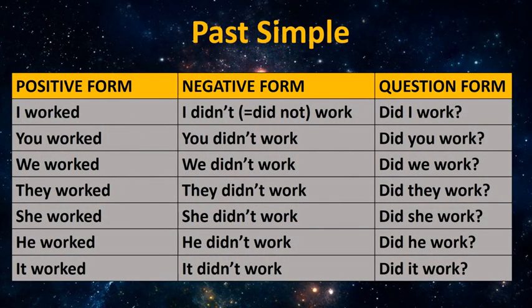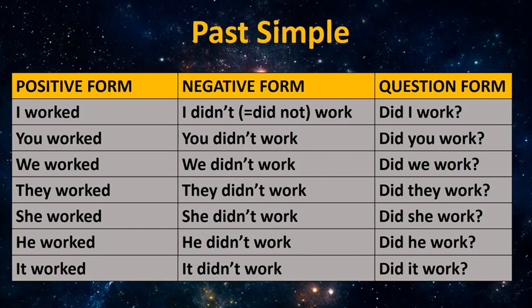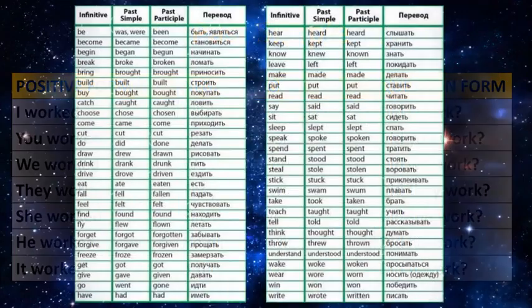Past simple is used for past actions. Past simple, like present simple, has three forms: positive, negative, and question. In regular verbs we add -ed to the verb. We use the second form of the verb if the verb is irregular. For example: I worked. In the negative form: I didn't work. Question: Did I work? Here we have a list of some irregular verbs. Please learn them by heart.